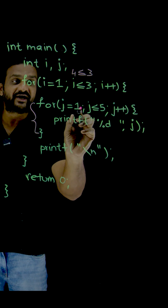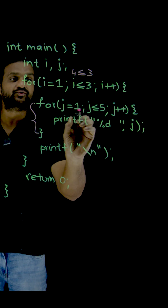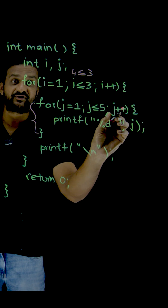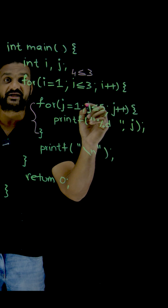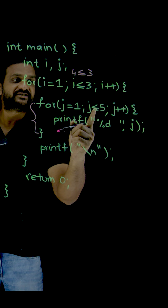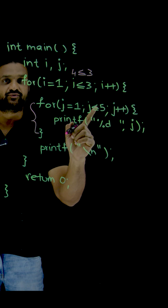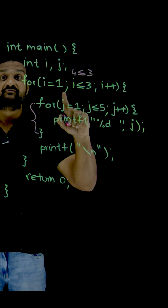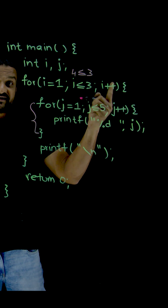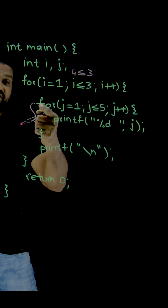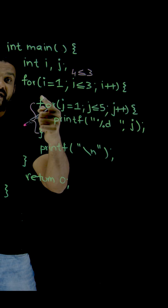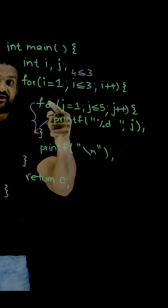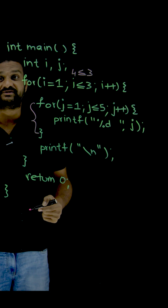j equals 1 — true. j equals 2 — true. j equals 3 — true. Every time j gets incremented by 1. j equals 4 — true. j equals 5 — true. Whenever the value of j becomes 6, we come out of this loop. Every time we enter the outer loop, the inner loop iterates 5 times.